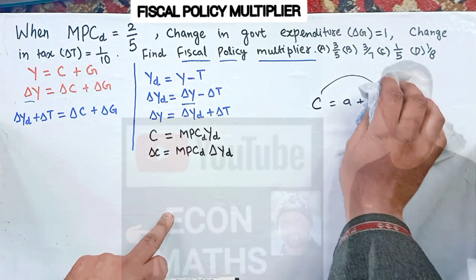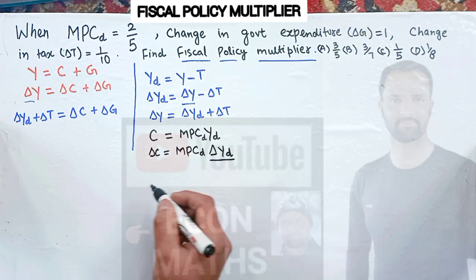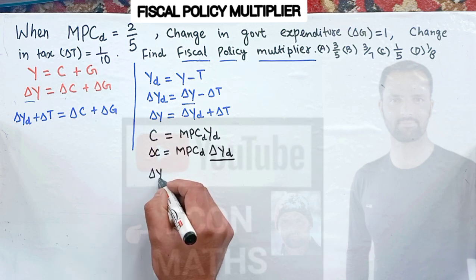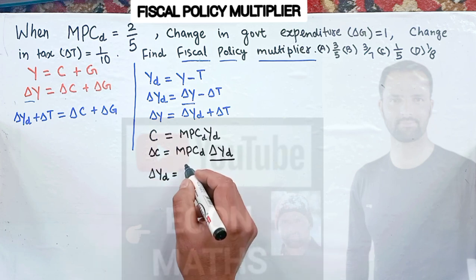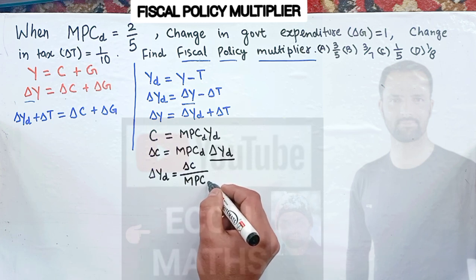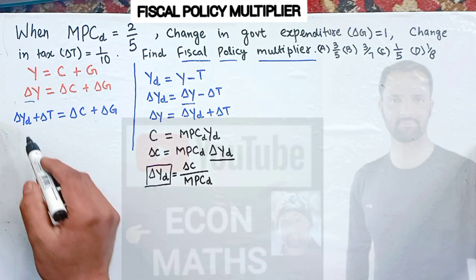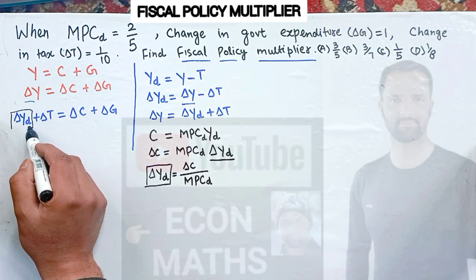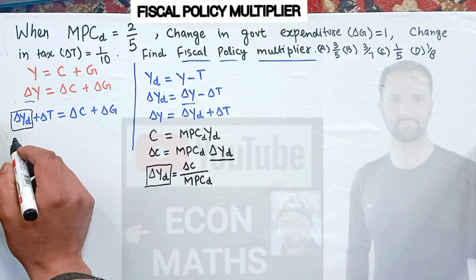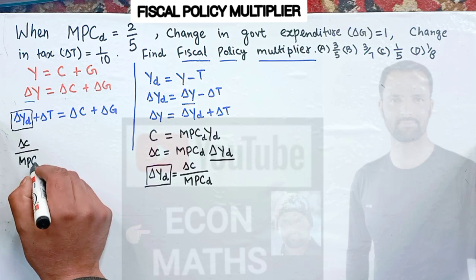Now if we solve for change in disposable income, we get: ΔYd equals ΔC divided by MPCd. So we have the value of ΔYd. In place of this change in disposable income, we can write ΔC upon MPCd.